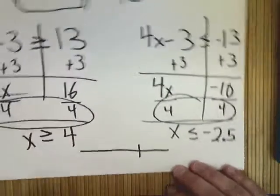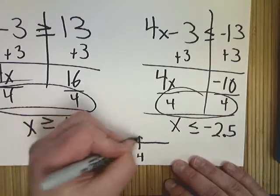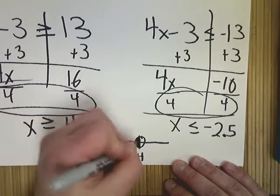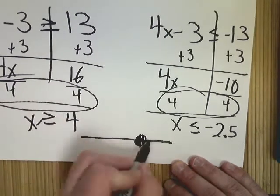So on my graph, I'd go down, and I'd make a line at 4. I'd circle it. Since this has a line under it, I'd fill it in. x is next to the bigger end, so it's greater, so it goes up.